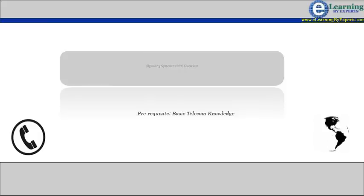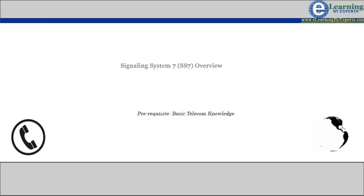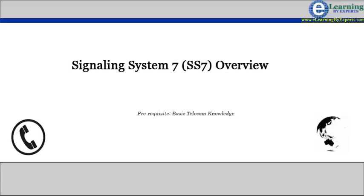Welcome to SS7 eLearning Program. Signaling System No. 7, SS7, is a set of telephony signaling protocols which are used in public switched telephone networks.